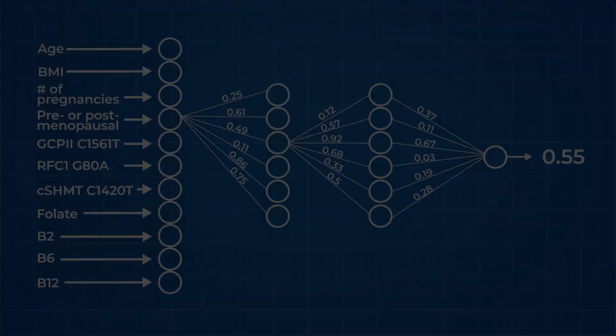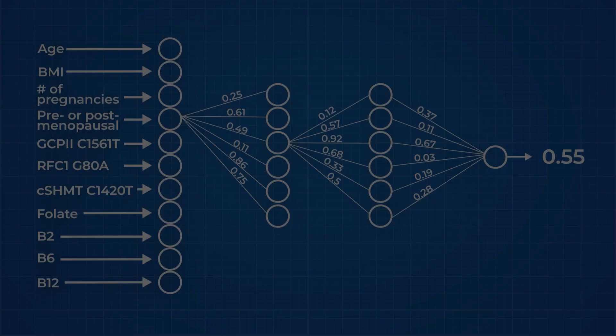The network will process the input data in this way, adjusting the weights, arriving at new outputs, repeating this process again and again until the error is sufficiently small and the actual and intended output coincide.